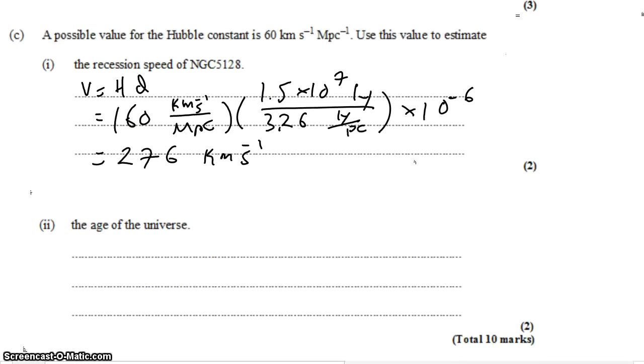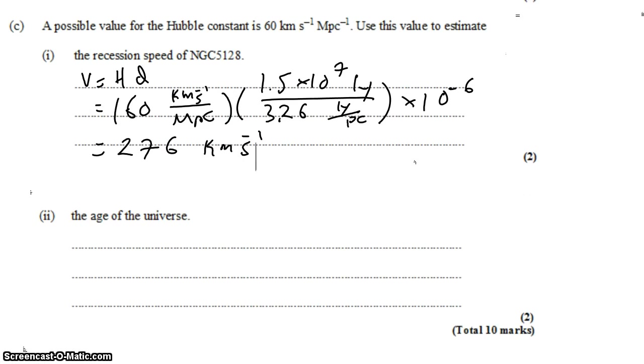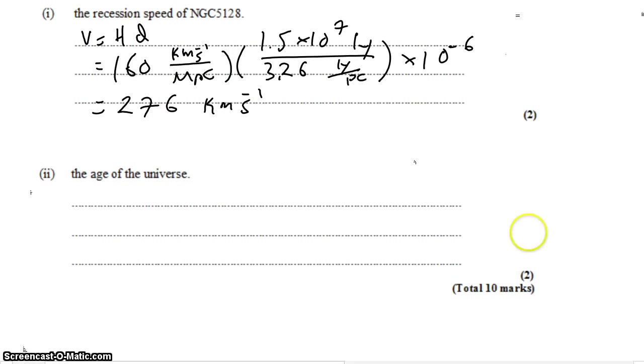Finally, we're going to use the value for the Hubble constant to estimate the age of the universe, which is kind of amazing that you can do that with a single number. But you can, because velocity is the distance you travel divided by the time taken. Or in other words, the time taken is the distance you travel divided by the speed with which you travel.